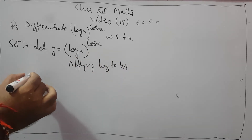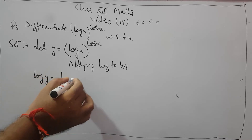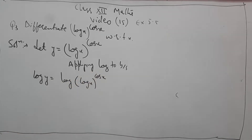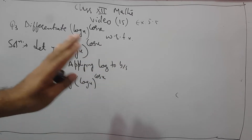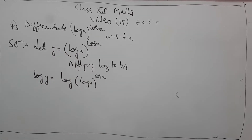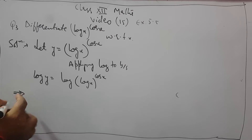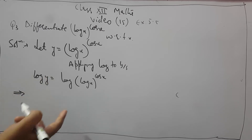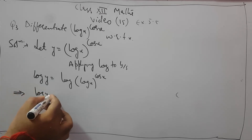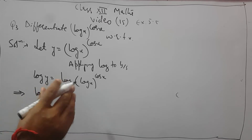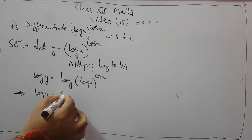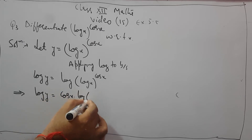So how to do this: log of y equals log of log x raised to power cos x. What we did when we applied log to both sides is we wrote log on both sides. Now we will use 'implies' at the start of each step. Using the property of log — log of m raised to power n — n comes to the front, so this becomes cos x into log of log x.